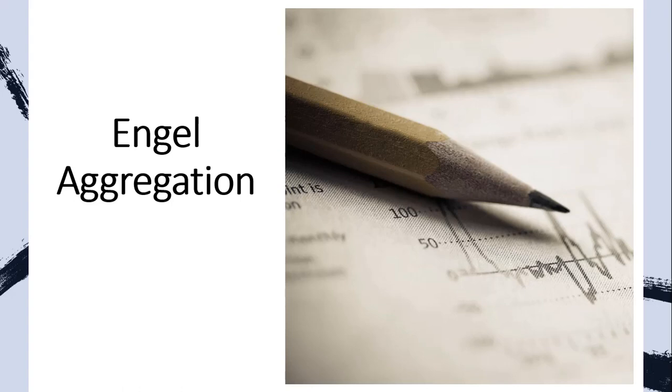Hello. In this video, we're going to look at Engel aggregation. We're going to start with the consumer's budget constraint. M is money income, and it equals the price of good X times the units of good X plus the price of good Y times units of good Y.